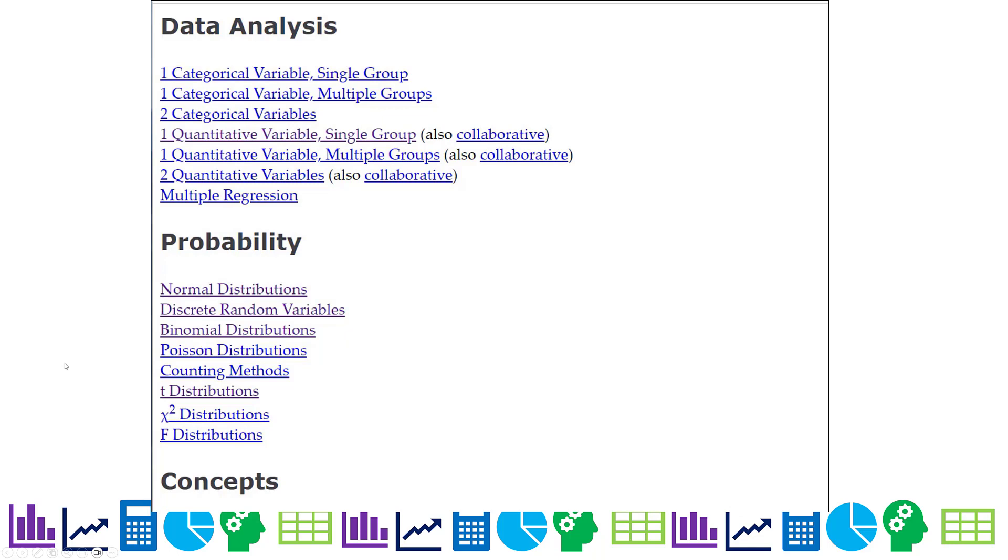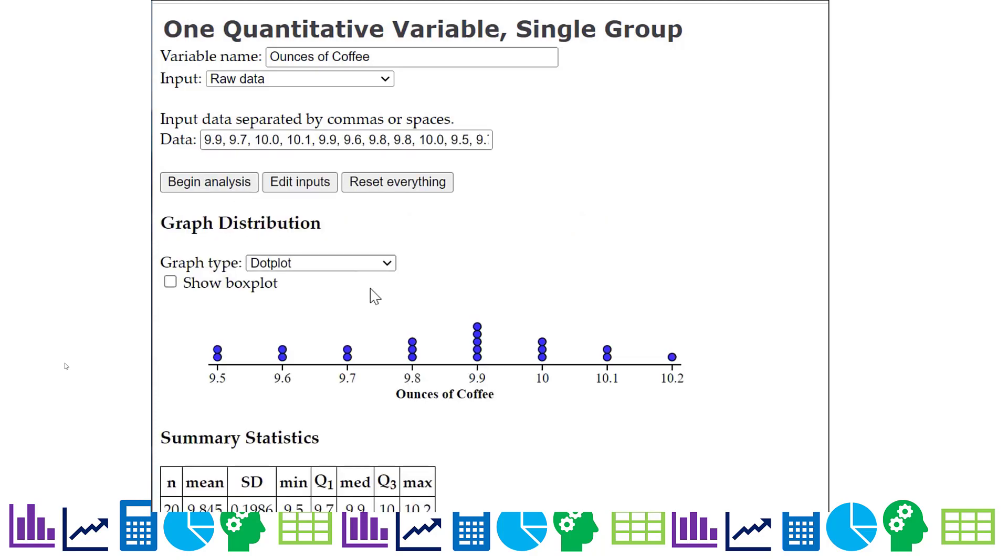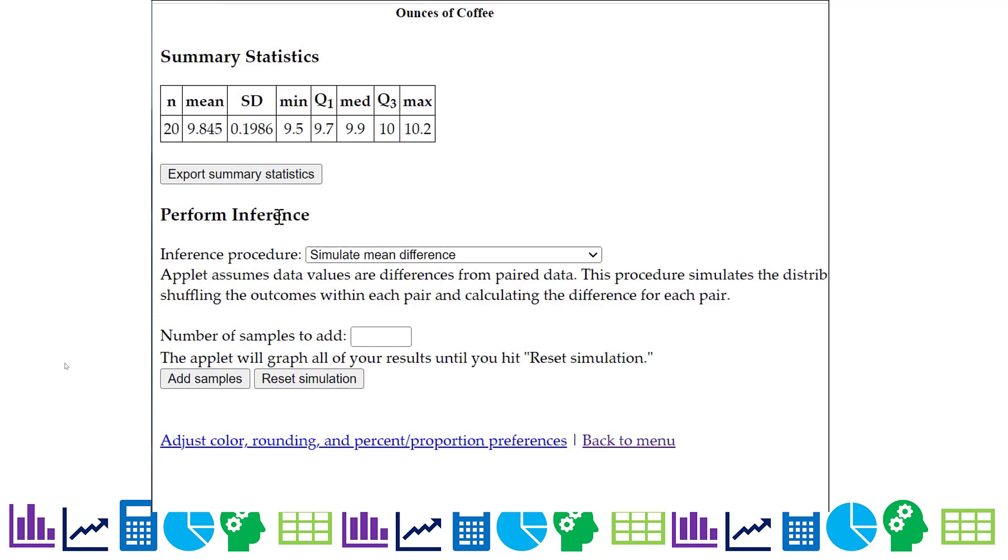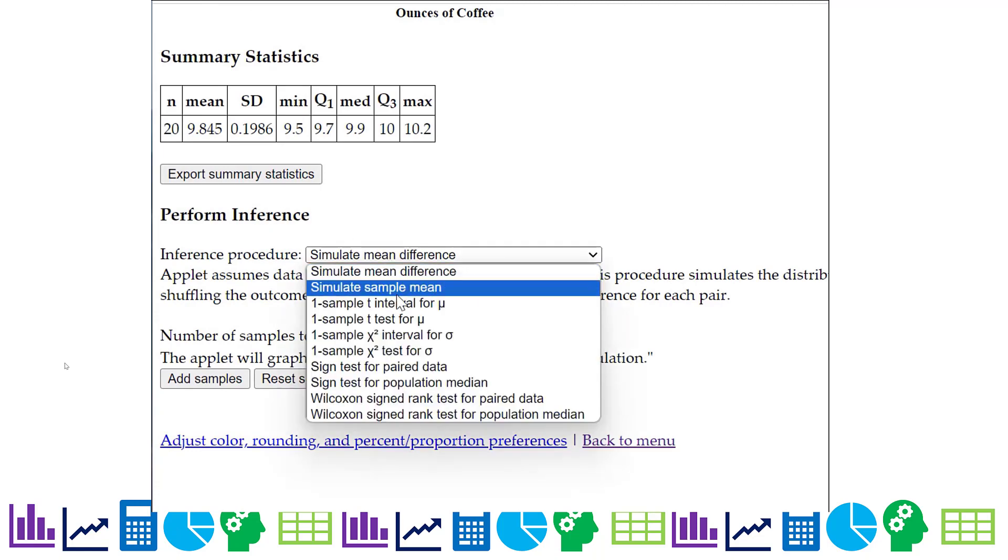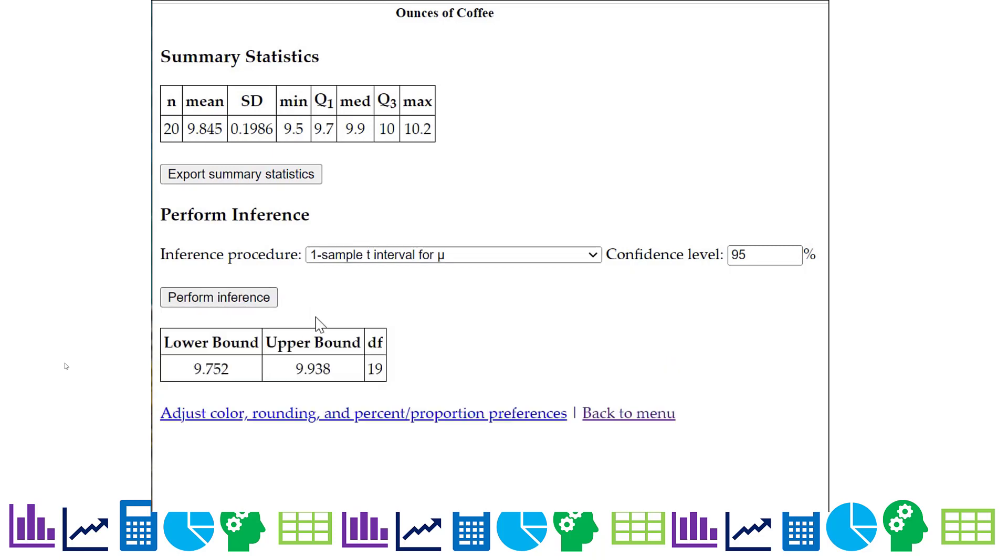We're looking for the mean of one set of data. So that's one quantitative variable because we have ounces of coffee, just one group of data, the sets of coffee. So we'll say ounces of coffee is our variable name. We're going to stay with raw data. Now I went ahead and copied the data so I could just paste it and then hit begin. And then I come down to perform inference. And I select the one sample T interval. And there's your confidence level. And we did one in 95% confidence. I hit perform inference. And there's the output lower bound and upper bound.